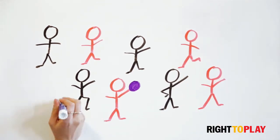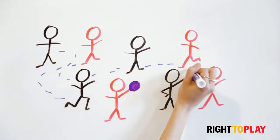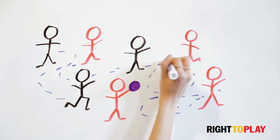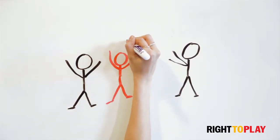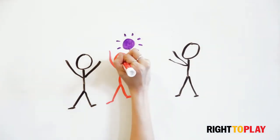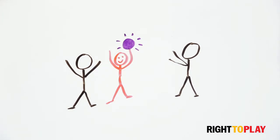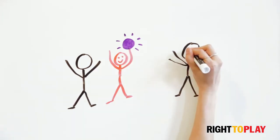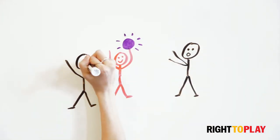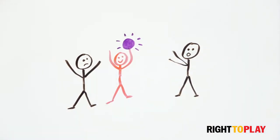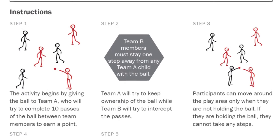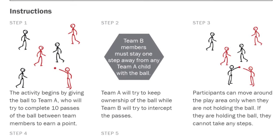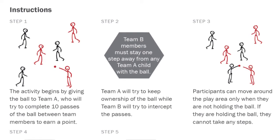Also, if a team intercepts the ball or knocks it out of the air, they get ownership of the ball. Make sure to point out where the boundaries are. Now that you've explained the game, ask if any of the participants have questions. If the game is still unclear, try demonstrating how the game will look with a couple of volunteers.